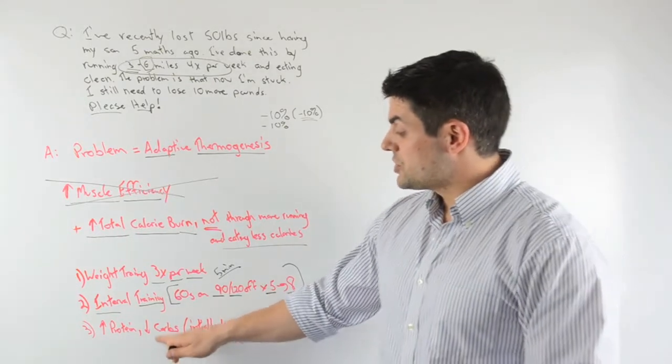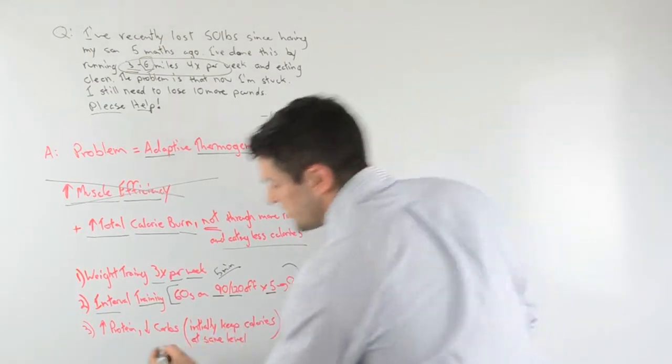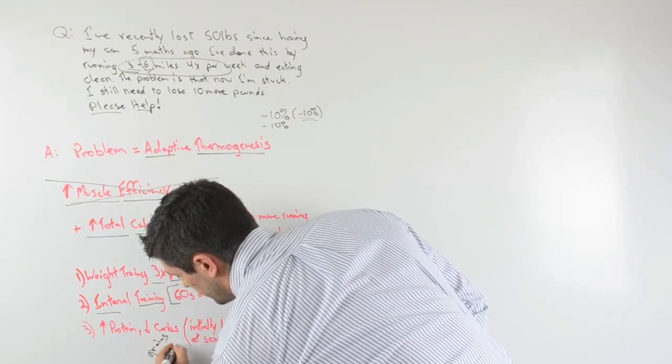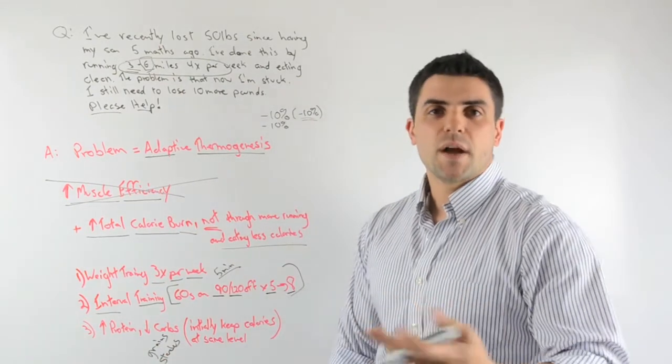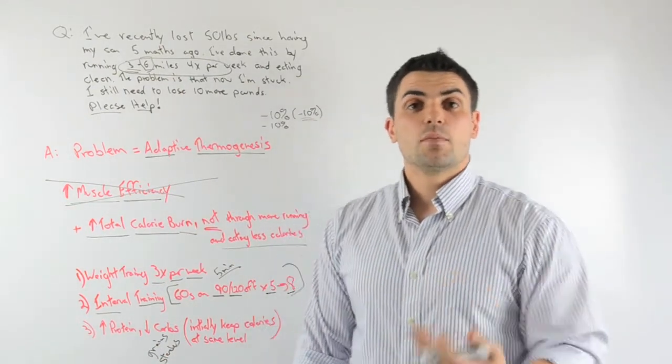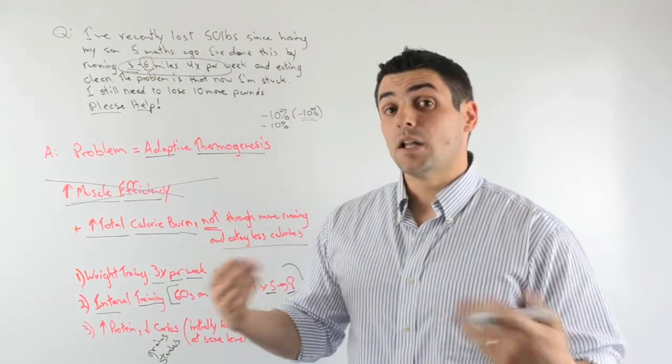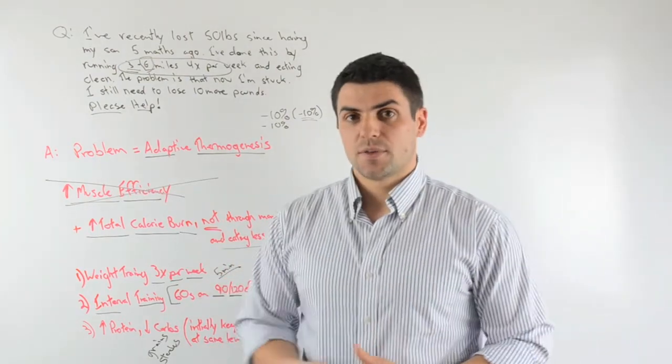And then we're going to decrease your carbohydrates. This is going to be specifically through grains and starches, breads, rice, pasta, etc. And then you're going to eat more green leafy vegetables. So you're going to feel like you're actually eating a lot more food by trading out some of the carbohydrates you're doing.